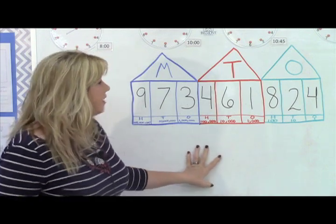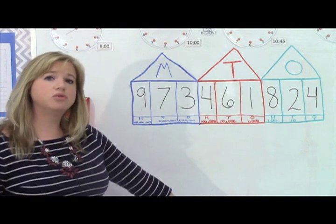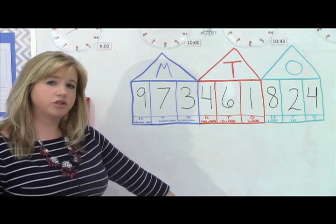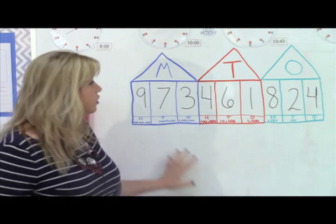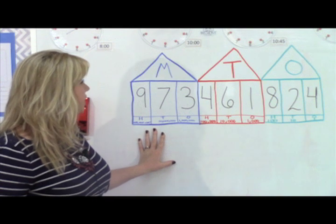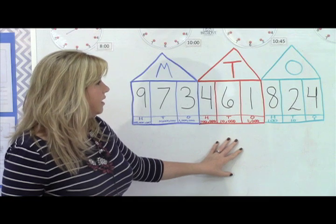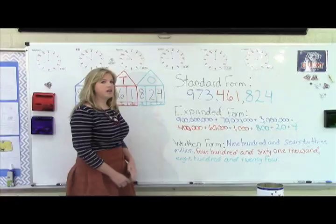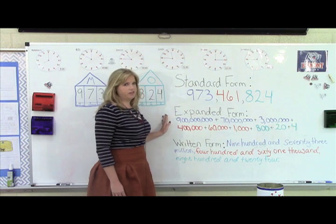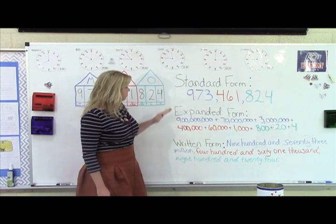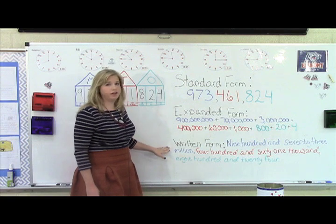The second thing that your child needs to know is three different ways to write the place value or to write the long numbers. So we have the number 973,461,824. The three different ways that I taught them are standard form, expanded form, and written form.